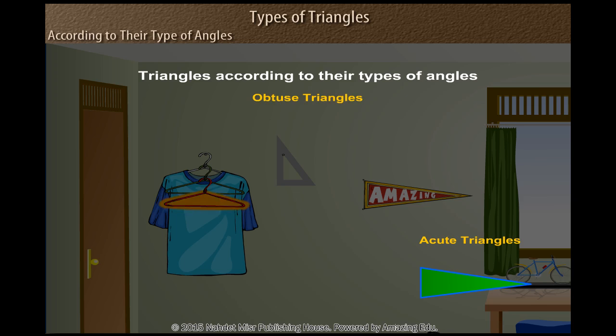Obtuse triangles: one of the angles has a measure more than 90 degrees.